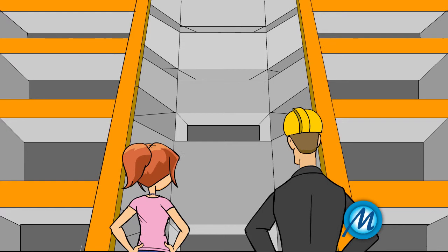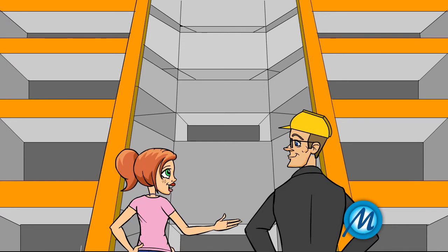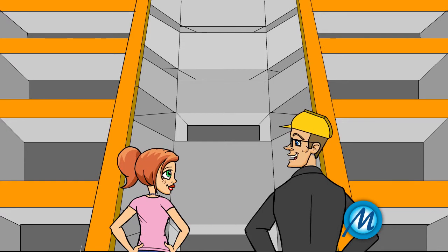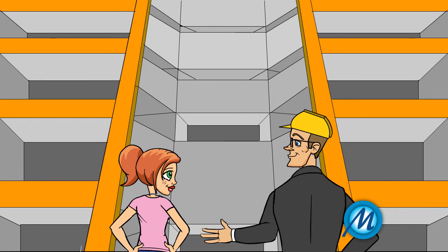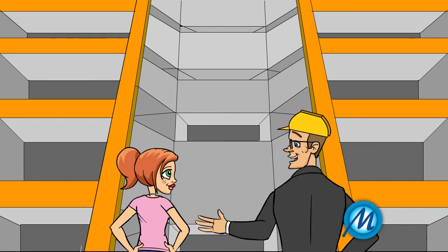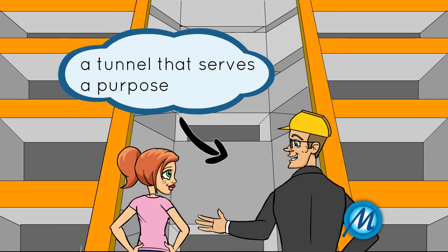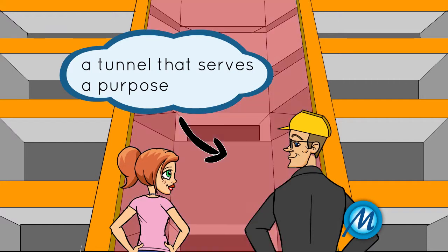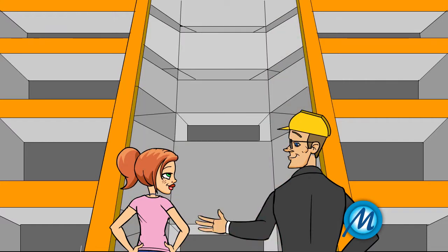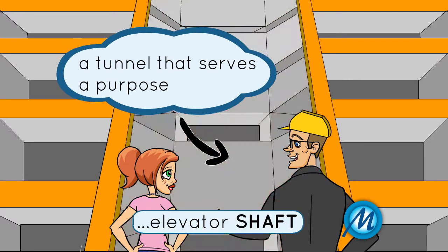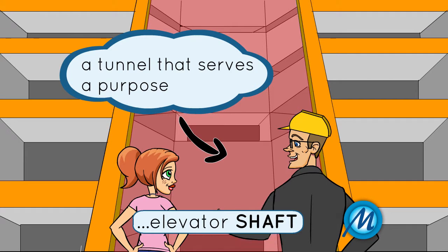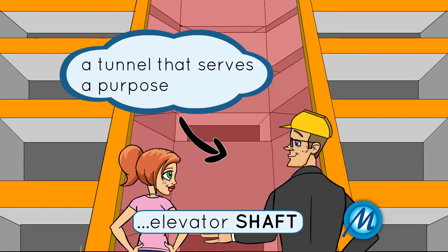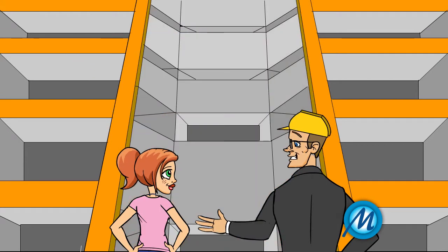Look at this long vertical tunnel. What on earth is it, Dad? This is where the elevator goes once the building is fully constructed. There are also narrower tunnels in the ceiling that are used for ventilation. We call this an elevator shaft, and the ones used for ventilation are called ventilation shafts.